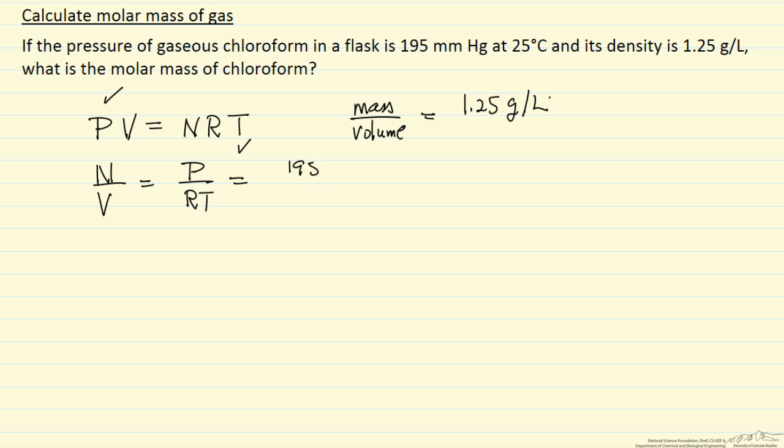Pressure 195 millimeters of mercury. Gas constant, we've got the one in the appropriate units, and the temperature 25 degrees C plus 273.2. This makes the temperature in Kelvin.